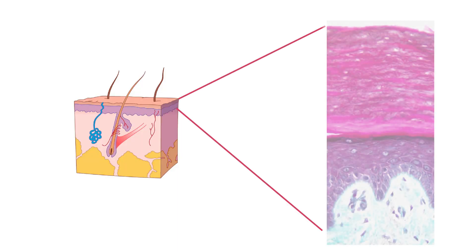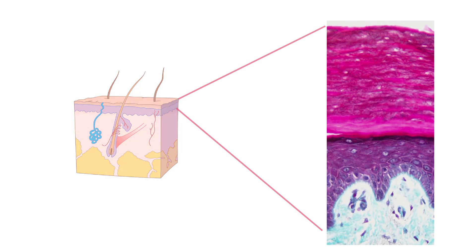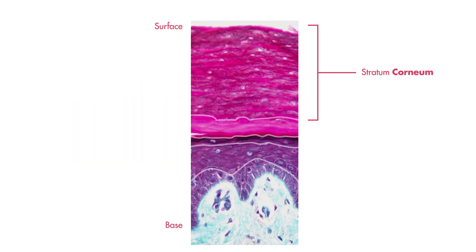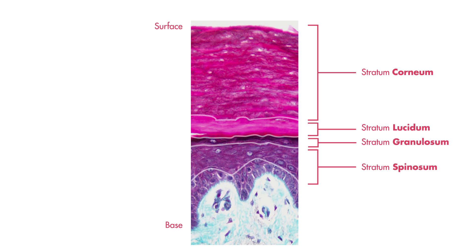So starting from the surface to the base of the epidermis, the layers include the stratum corneum, stratum lucidum, stratum granulosum, stratum spinosum, and stratum basale.